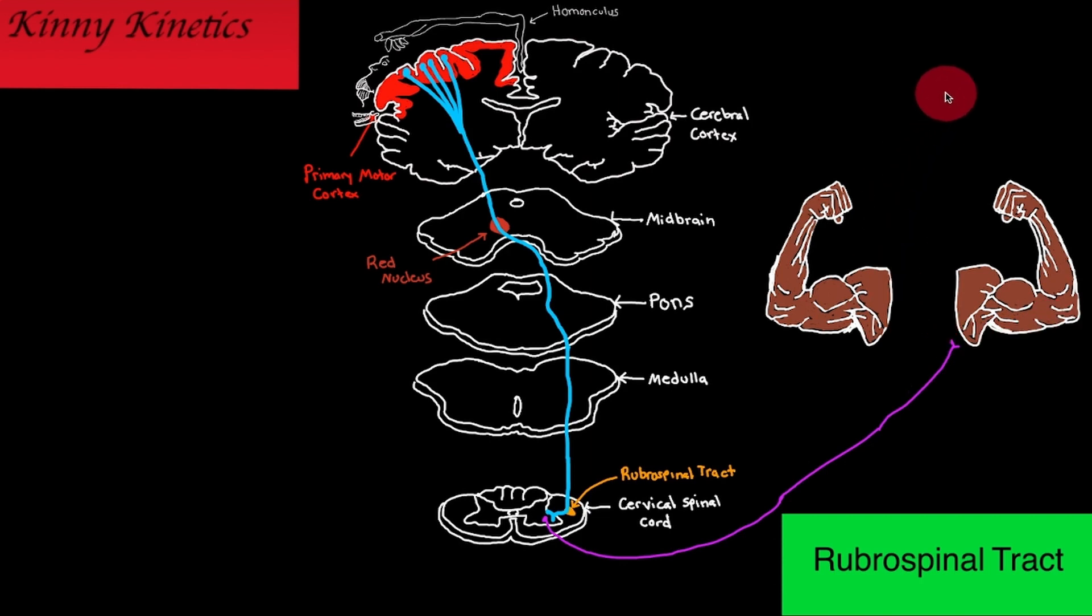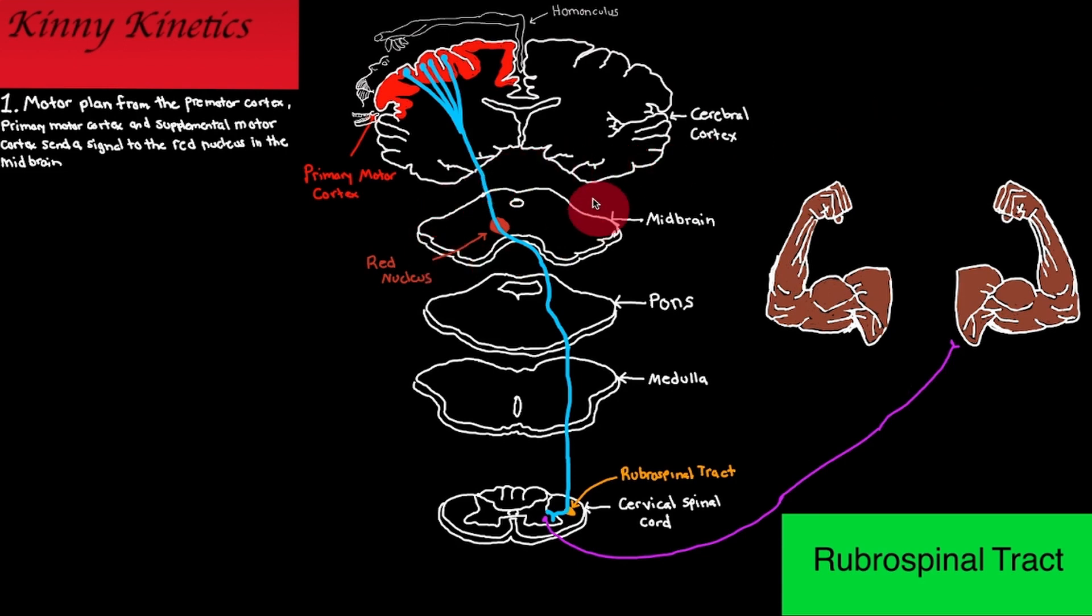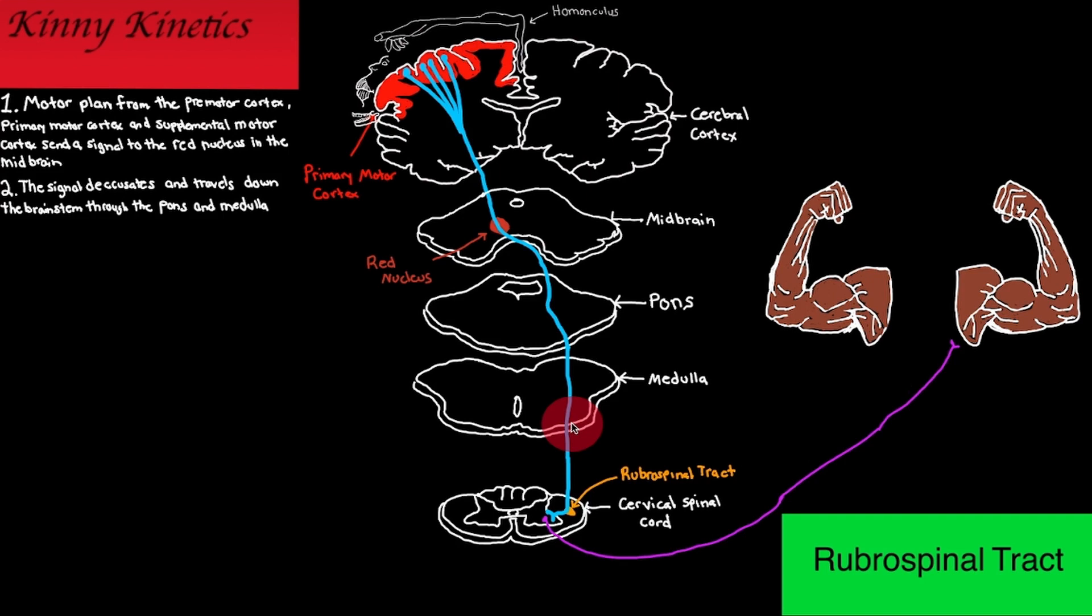Let's recap the steps of the rubrospinal tract. Number one: the motor plan from the premotor cortex, primary cortex, and supplemental motor area send a signal to the red nucleus in the midbrain. Number two: the signal decussates and travels down the brain stem through the pons and the medulla.